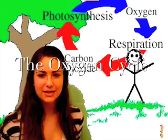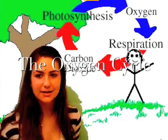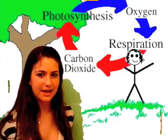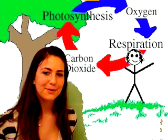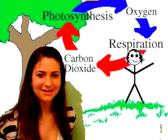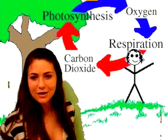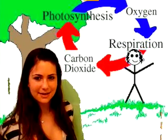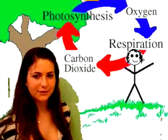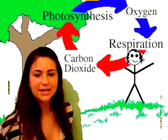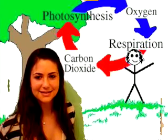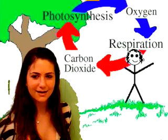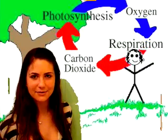In the process of respiration, oxygen is taken by living organisms and released into the atmosphere combined with carbon in the form of carbon dioxide. Carbon dioxide enters the carbon cycle or is taken out by plants for photosynthesis. During photosynthesis, oxygen is created by the chemical splitting of water and returned to the atmosphere.